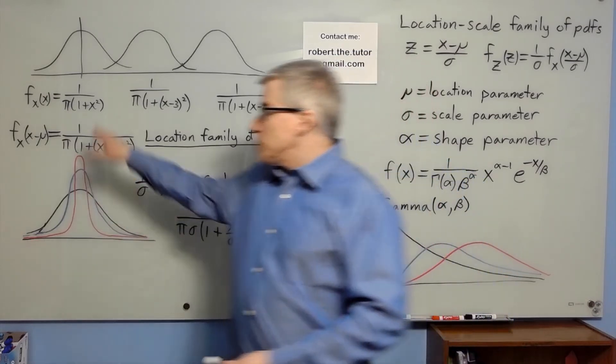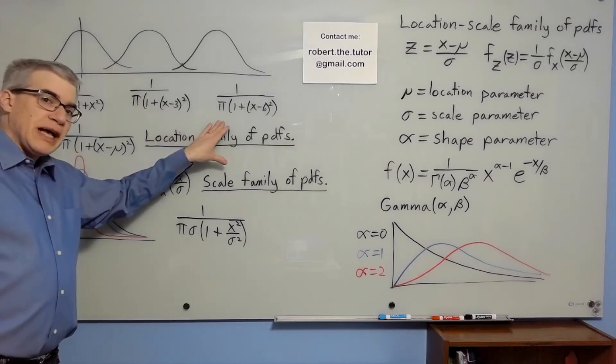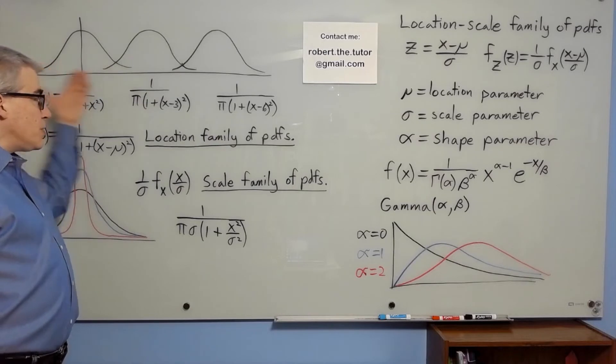So if you start with the Cauchy distribution here, you could then shift it to the right if you want, using what we call a location parameter, mu. And these form a family of PDFs. You're talking about all the different PDFs here.